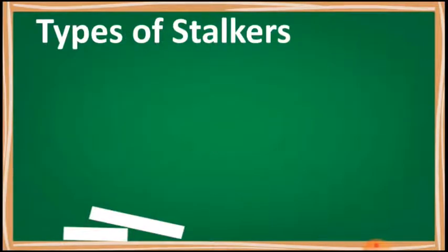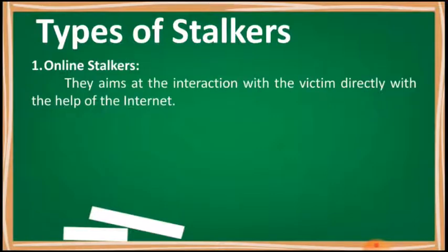There are primarily two types of stalkers. The first one is online stalkers. They aim at interacting with the victim directly with the help of the internet, and email and chat rooms are the most common communication mediums to connect with the victim, rather than using traditional methods like telephone or cell phone. The stalker makes sure that the victim recognizes the attack, and the stalker can also make use of a third party to harass the victim.